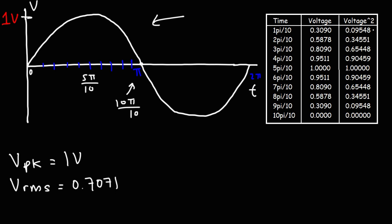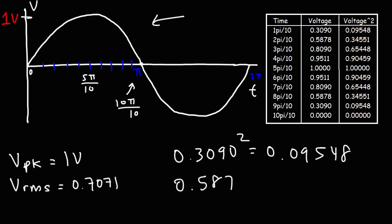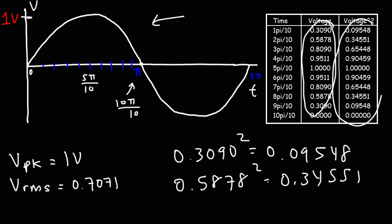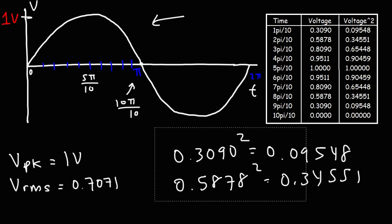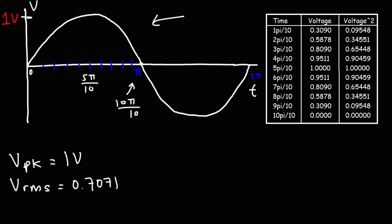To calculate the root mean square of a set of numbers, you square the numbers first, then take the arithmetic mean of those squares, and then take the square root of that arithmetic mean — that gives you the RMS value. So right now we have the squared voltages. We're going to take the sum of those squares, divided by the number of intervals N, to get the arithmetic mean of the squared voltages, and then take the square root of that result to get the RMS value.